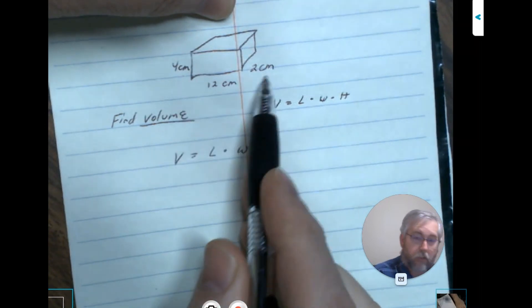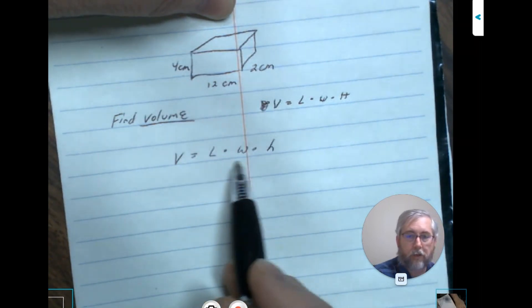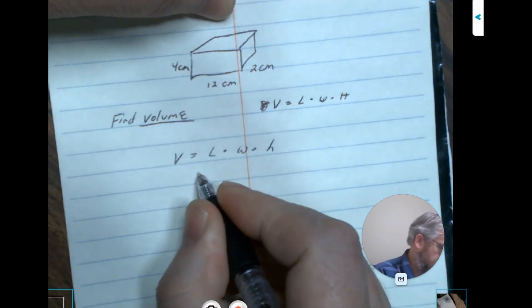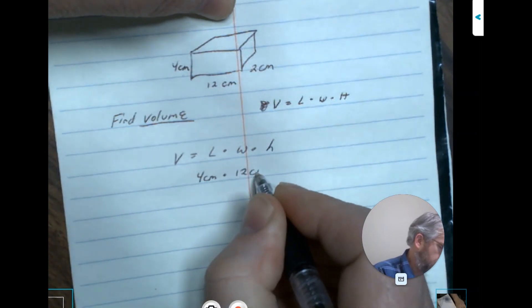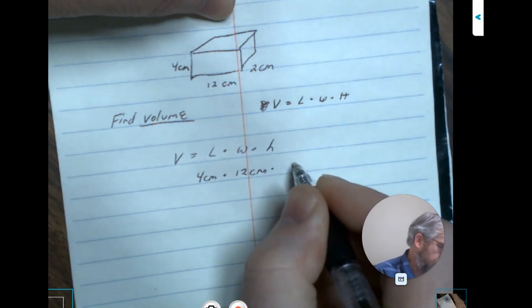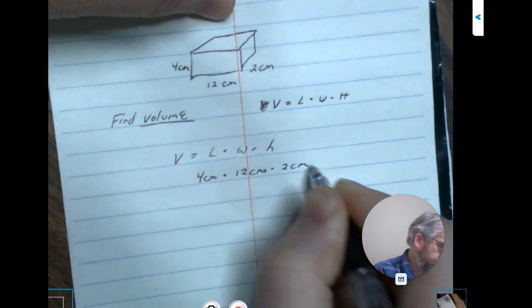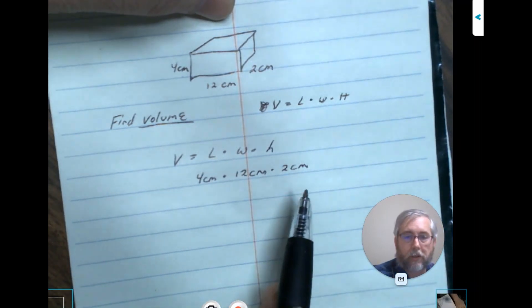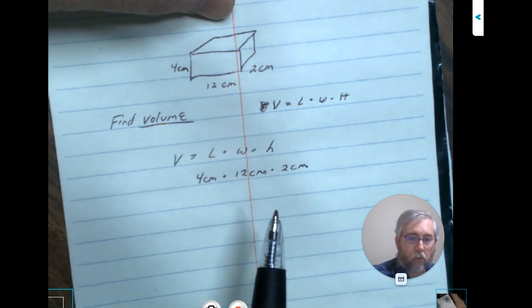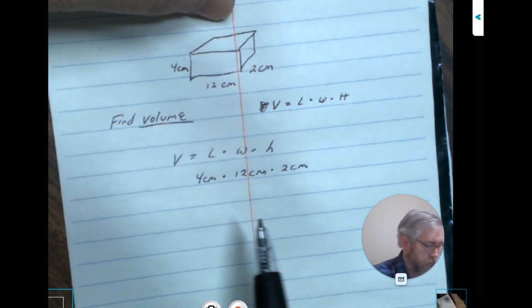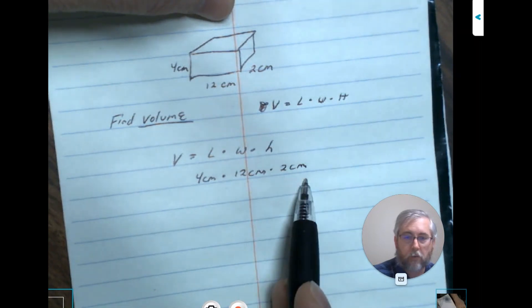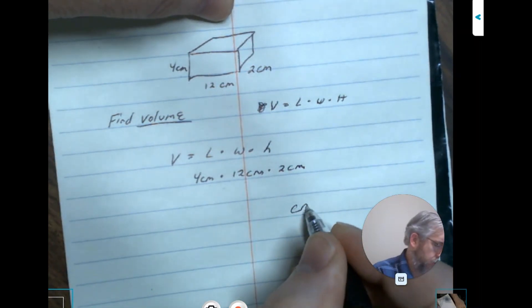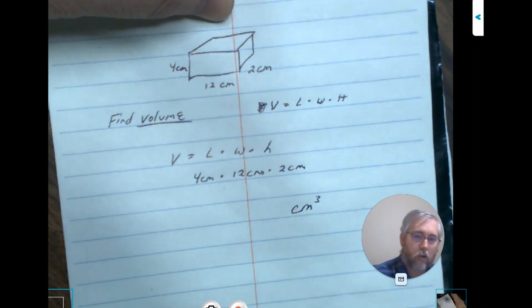I could put in these values within here, so essentially I'm saying 4 centimeters times 12 centimeters times 2 centimeters. We'll have to multiply each one of these accordingly. The one thing that we want to do, since each one of these are centimeters and there are three, we can immediately say this will give us centimeters cubed.